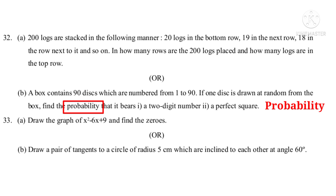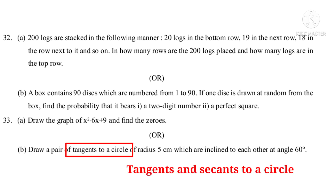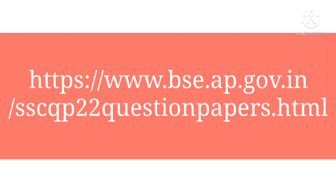Question 33A: Draw the graph of x² − 6x + 9 and find the zeros — from Polynomials. Question 33B: Draw a pair of tangents to a circle of radius 5 centimeters which are inclined to each other at an angle of 60 degrees — from Tangents and Secants to a Circle. A link is provided to download SSE Public Model Papers of all subjects at one place. Download and work hard to get good marks in SA1 as well as SSE Public Examinations. Best of luck.